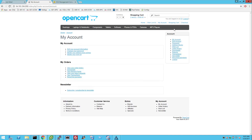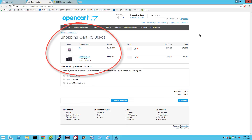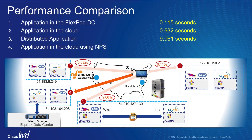As we can see, the user and the cart information is now available in this new instance of the application. Now that we have finished deploying an application which retrieves user data from NetApp Private Storage in Equinix, let's validate the web page load time for this new application instance.